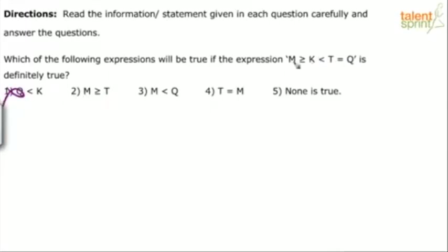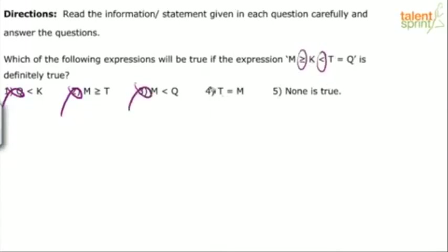M greater than or equal to T — no, M and T cannot be compared. M less than Q — M and Q cannot be compared. Remember rule number 3: dissimilar inequalities between M and Q, so cannot be compared. T equals to M — no. So again, answer is option 5. None is true.